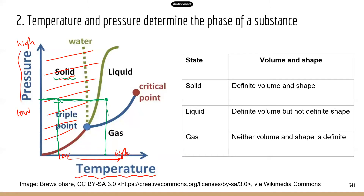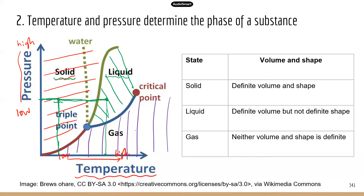You provide heat, you provide energy, so now the molecules can really spread out. They become less orderly — they become liquid from the previous solid state. Liquid is in the particular region between the green line and the blue line.